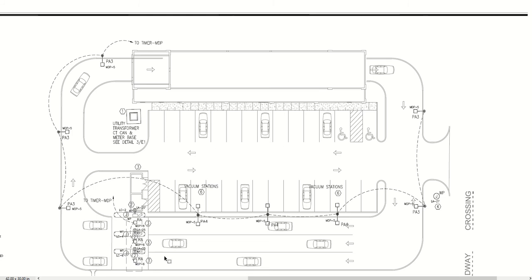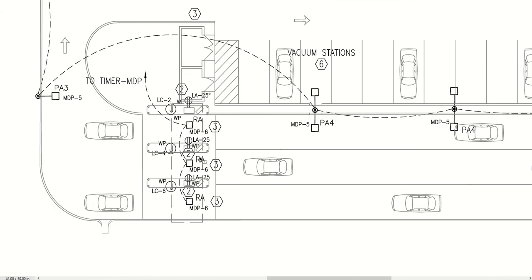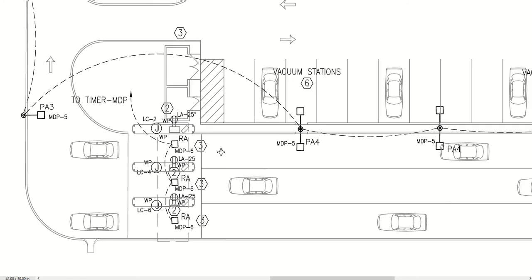We also have this turnstile island out here. This is where the cars come up, they can make their payment, punch their code, and it opens the arm so the cars can pull through — so it did require some power out there. As we zoom in on this, you'll see the weatherproof outlets with their circuit tags, the light fixtures with their circuit tags, and the junction boxes to connect the computer terminal to. Not a whole lot different there.